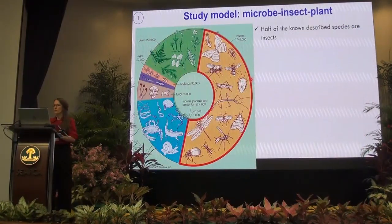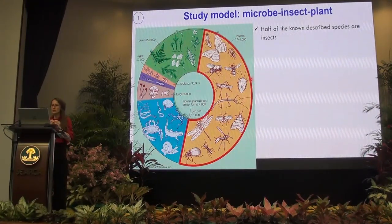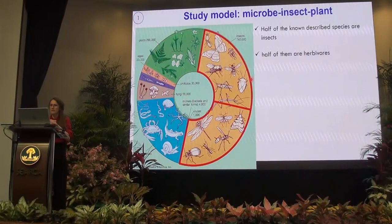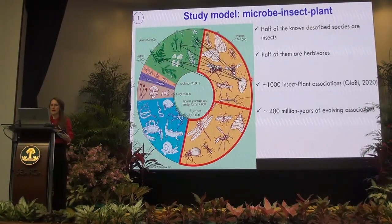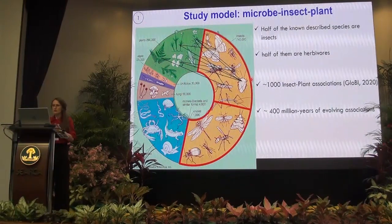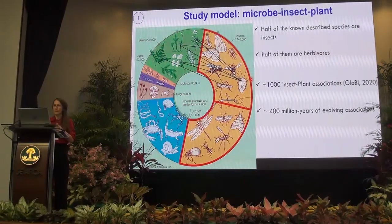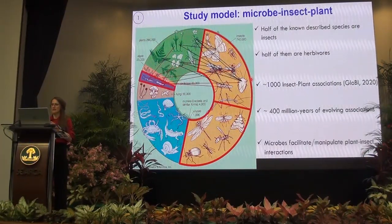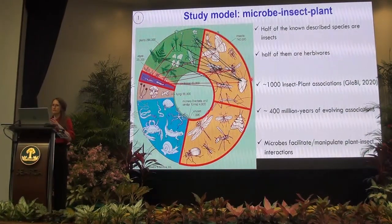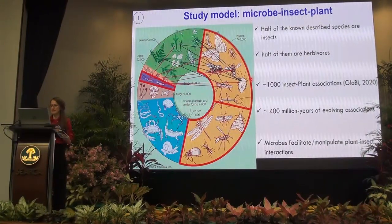To contextualize the importance of my study model, let's start with the proportion of the described diversity on Earth. We know that half of known described species are insects, and that about a thousand insect-plant associations have been documented in the Global Biotic Interaction database. We also know that plants and insects have been evolving together for over 400 million years.